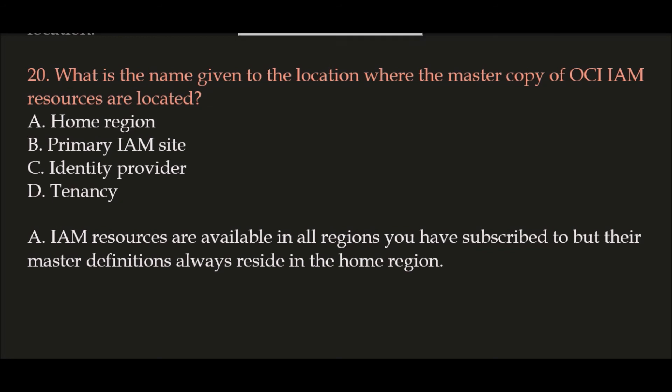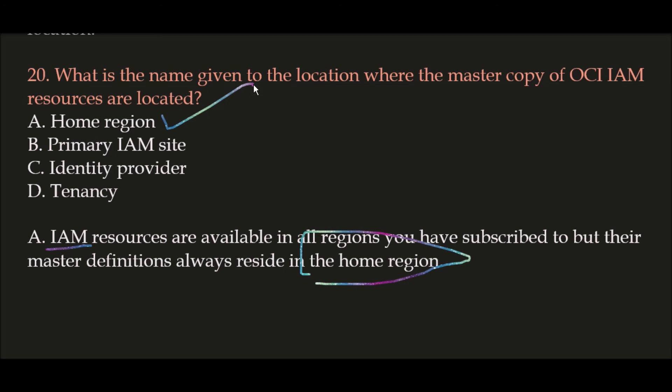Question 20: What is the name given to the location where the master copy of OCI IAM resources are located? Option A: Home Region, Option B: Primary IAM Site, Option C: Identity Provider, Option D: Tenancy. The correct answer is Option A, Home Region. IAM (Identity and Access Management) resources are available in all regions you have subscribed to, but their master definitions always reside in the home region.